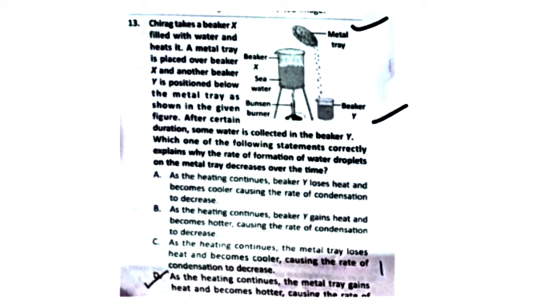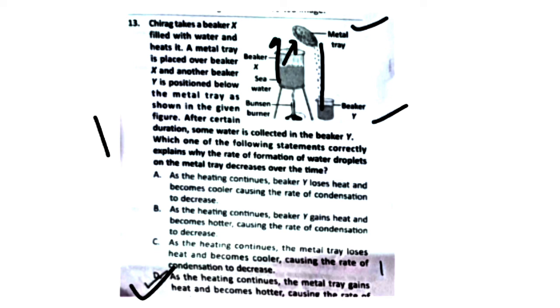The steam rises from beaker X, hits the cooler metal tray, and condenses — water droplets fall into beaker Y. But as we continuously heat the beaker, the temperature rises and the rate of condensation decreases. This is Option D, which is the right answer.